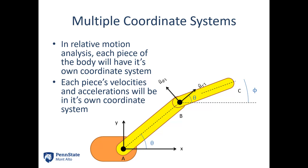Going from point A out to point B, that is my R1 direction, and 90 degrees counterclockwise from R1 is theta1. I have another coordinate system, R2 and theta2, attached to member BC. Going from point B towards point C is the R2 direction, and 90 degrees counterclockwise from that is the theta2 direction. As AB and BC rotate around in this system, R1 and theta1 remain stuck to member AB, and R2 and theta2 remain stuck to member BC.